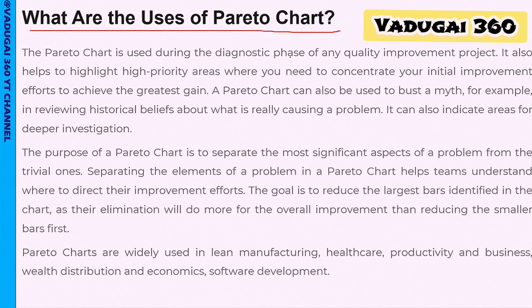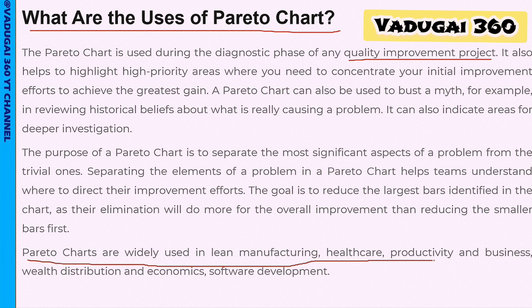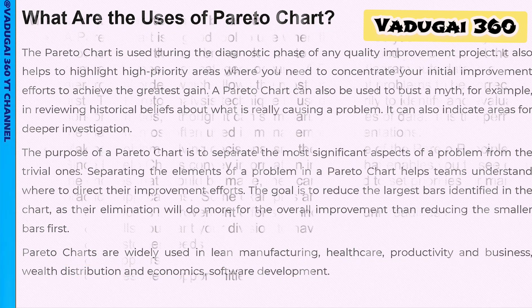What are the uses of the Pareto chart? It is mostly used for quality improvement projects. You can use it in Six Sigma or Lean projects. It can define any problem, justify root cause analysis, and is widely used in lean manufacturing and health products.